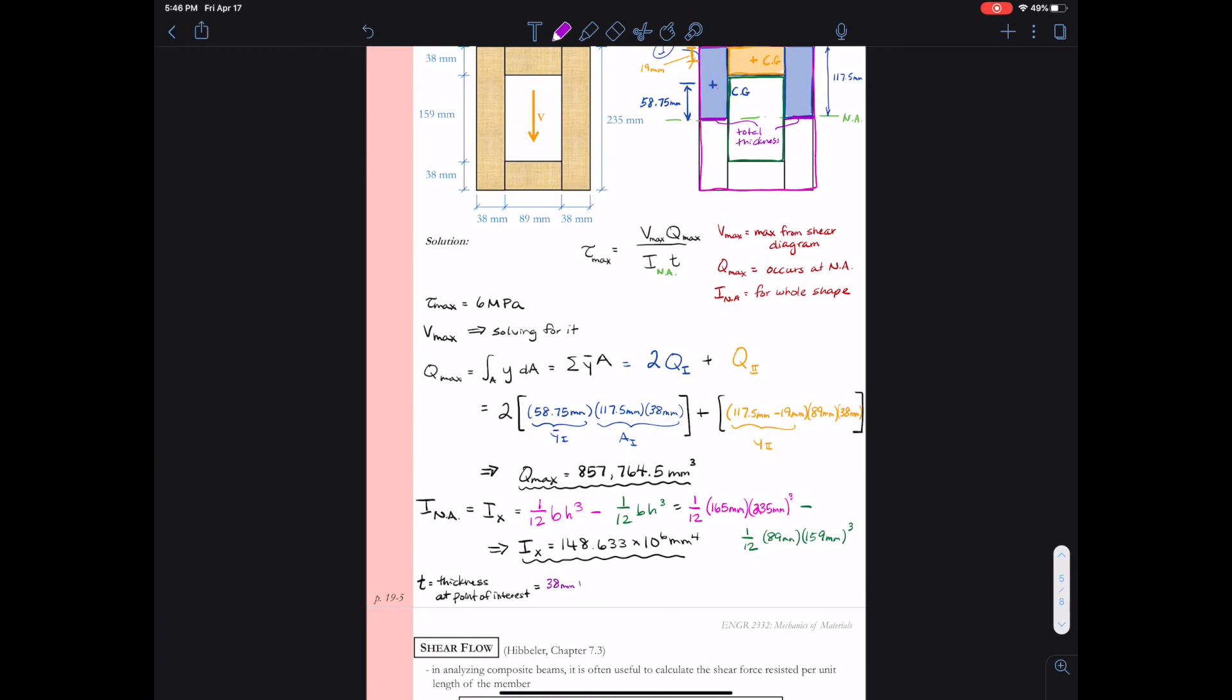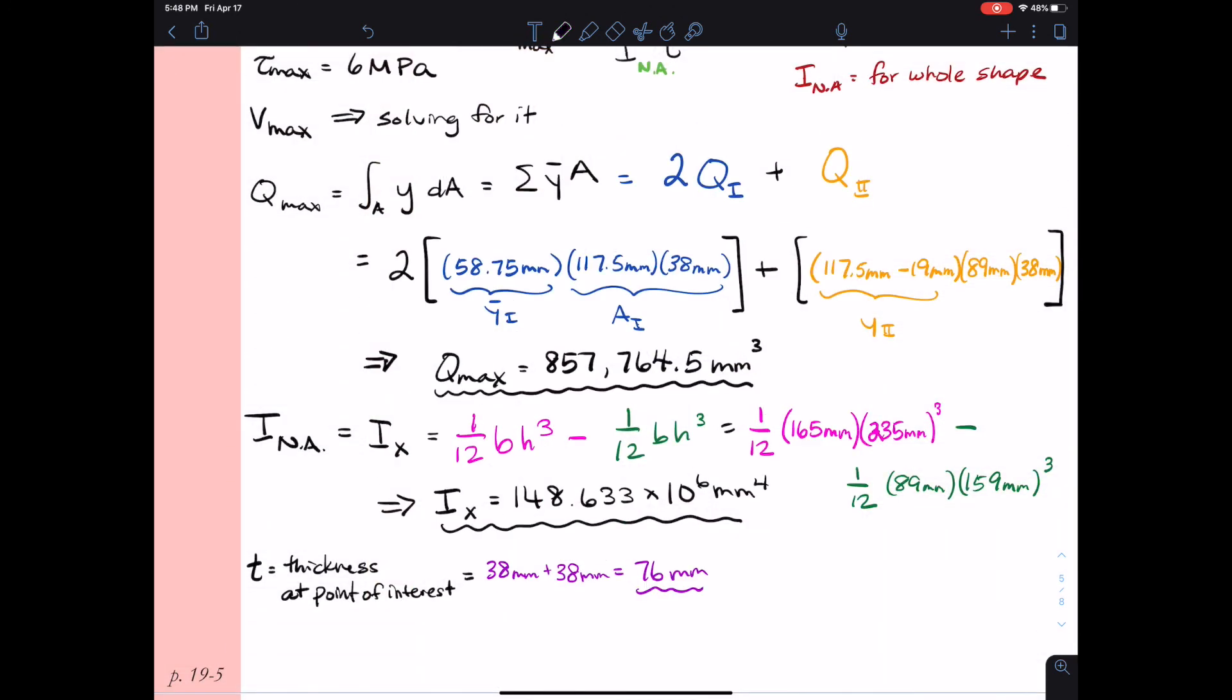Finally, we need T, which is the thickness at the point of interest. The point of interest is at the neutral axis. So we do the total thickness, which is 38 millimeters plus 38 millimeters or 76 millimeters. We have everything we need now to solve for the max shear that this box beam can handle. So we just plug in the numbers that we determined above.